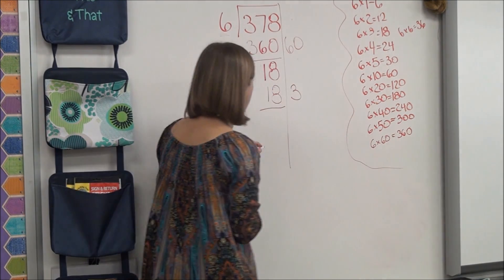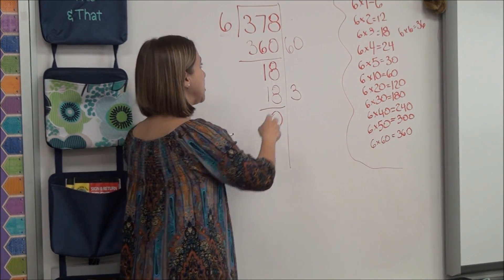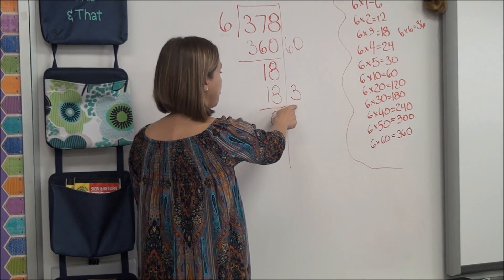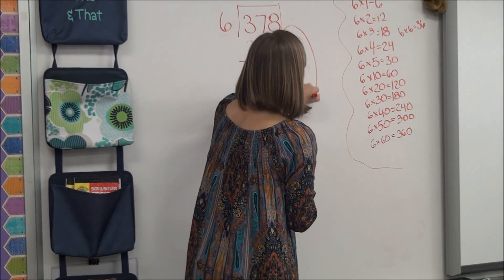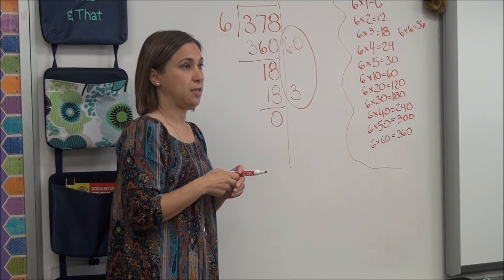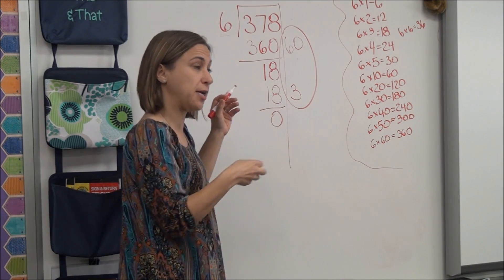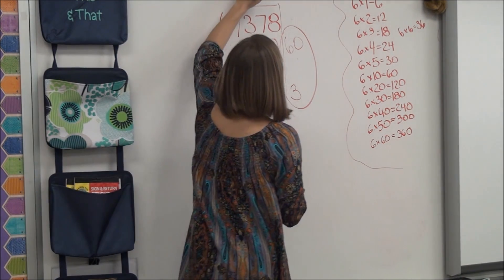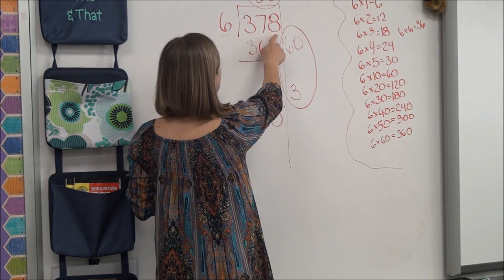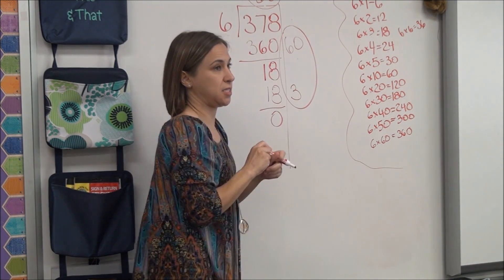Okay, do I have anything left over? No. So now let's look. I took 6 out 60 times. I took 6 out another three times. So how many times did I repeatedly subtract or how many times did I divide? 63. Okay, so I repeatedly subtracted 6 from 378, 63 times, and that is 378 divided by 6 is 63.